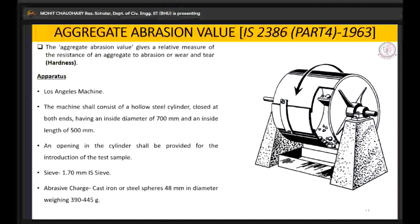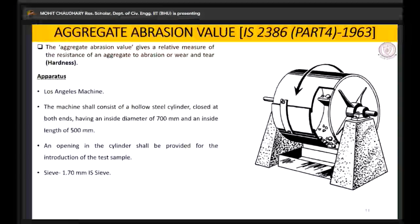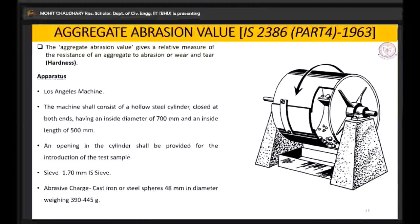We need cast iron balls. We input the material in the machine. If we just put the material and rotate it, it will cause some abrasion due to mutual rubbing of stones. But we are here to create the situation of actual load. So we put some extra steel balls in it, which are 48 mm in diameter and their weight is around 400 to 450 grams. We put some specified number of balls in it and rotate it at a certain revolution period. The balls collide with the aggregates again and again, due to which the material gets abraded and the abrasion process takes place.